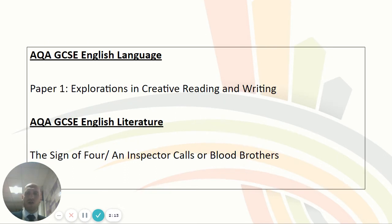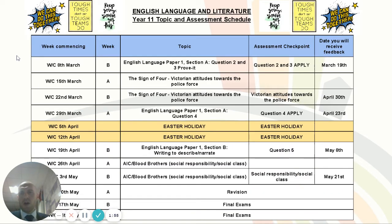That means students will now be assessed in Explorations in Creative Reading and Writing for English Language, and in English Literature they'll be looking at The Sign of the Four and either An Inspector Calls or Blood Brothers, depending on which text they studied. Students are now aware of what they're going to be studying every single week and where the assessment checkpoints are, and this has been shared with students.